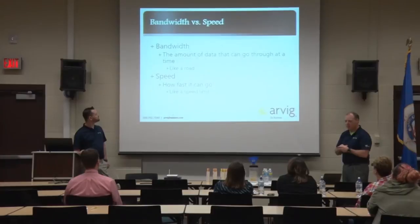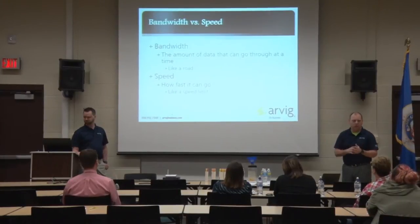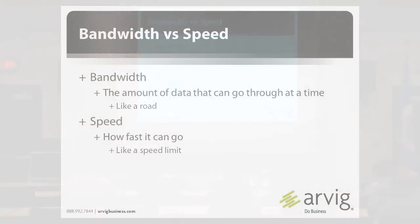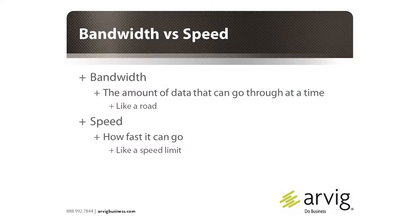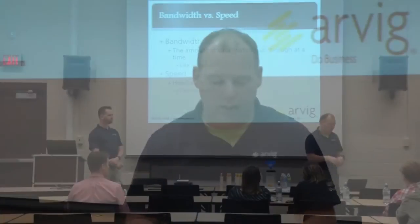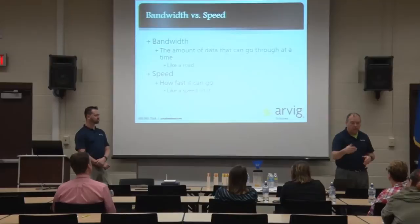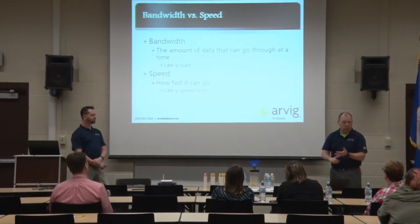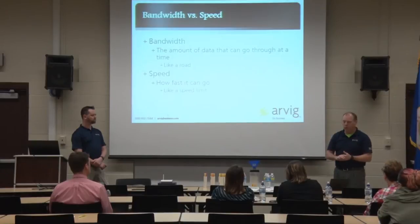Now, bandwidth and speed — this gets confusing for people. Bandwidth is simply the amount of data that can go through at a time. Think about a road: we've all driven two-lane roads, four-lane roads. Out east you've seen six- and eight-lane roads, and in California some are even bigger. That's the amount of traffic or data that can flow. The bigger the road — 10, 20, 30, 40 lanes, single lane, double lane — that's the amount of traffic that can flow through at a time.